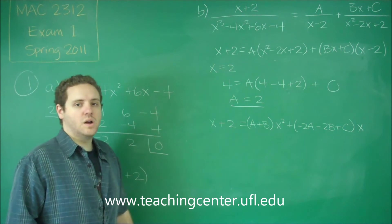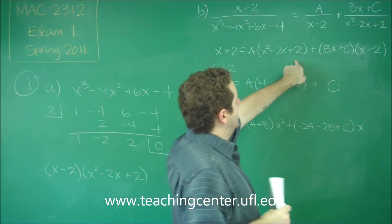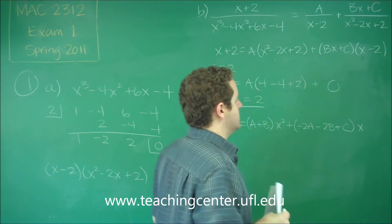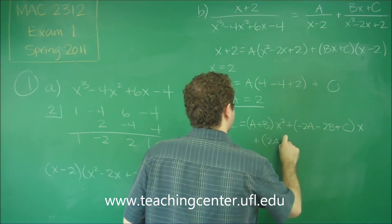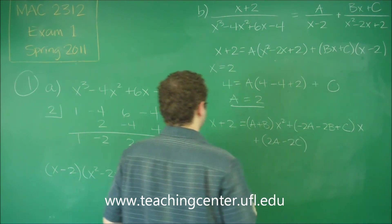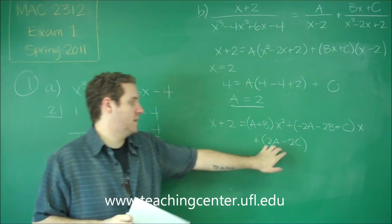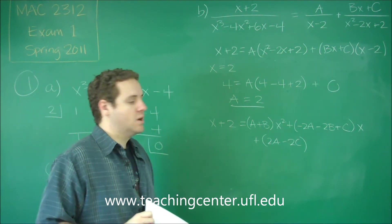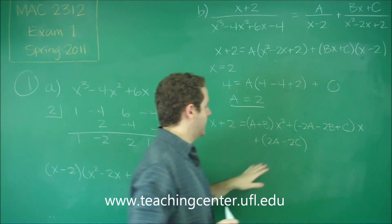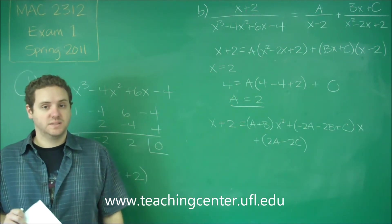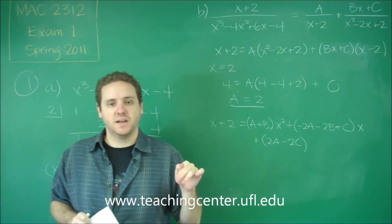And finally, what constant terms would we get? Well, we'd have 2A. And over here, the only constant term we would get is minus 2C. So we'd have 2A minus 2C as a constant term. So I like to put those in parentheses just so you know this is like all the constants together. So we have this coefficient of x squared, this coefficient of x, this coefficient for the constant. So all of these have to match their counterparts on the left side.